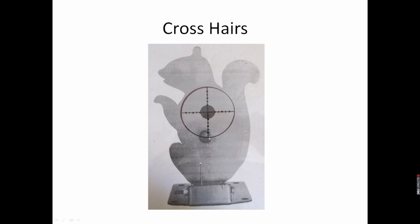Crosshairs — here you can see we have the target and the reticle from our scope lined up. Where the horizontal and vertical lines meet, that's what we refer to as crosshairs. In this view we're assuming the target is at our zero distance, so we affix the crosshairs in the center of the target and shoot, and hopefully we get a kill or score a bullseye.